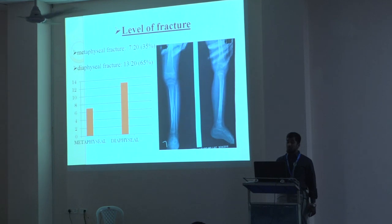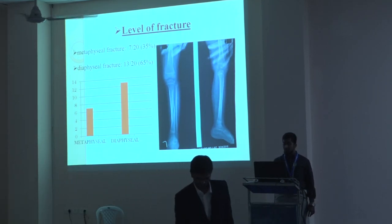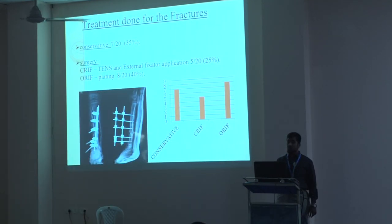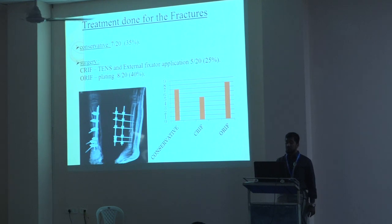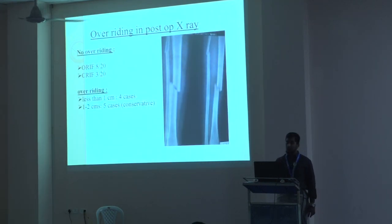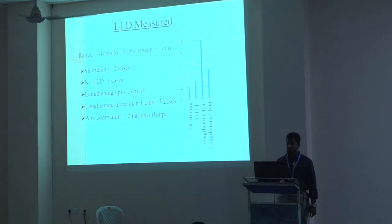Fractures at the level of metaphysis occurred in 7 patients (35%) and diaphyseal tibia fractures in 65%. Conservative management was used in 7 cases (35%), and the remaining patients were surgically operated. Closed reduction with elastic nails and external fixator application comprised 25%, and open reduction was done in 40% of patients. No overriding was found in patients operated by open reduction in 8 cases and closed reduction in 3 cases. Overriding of 1 cm was found in 4 cases, and 1 to 2 cm overriding in 5 cases with conservative management.